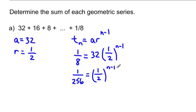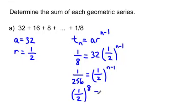We need to find what exponent gives us one over 256. Since 2 to the 8th equals 256, we know (one half) to the 8th equals one over 256. This means n minus 1 equals 8, so n equals 9. Be careful — the exponent is n minus 1, so don't rush to say n equals 8.